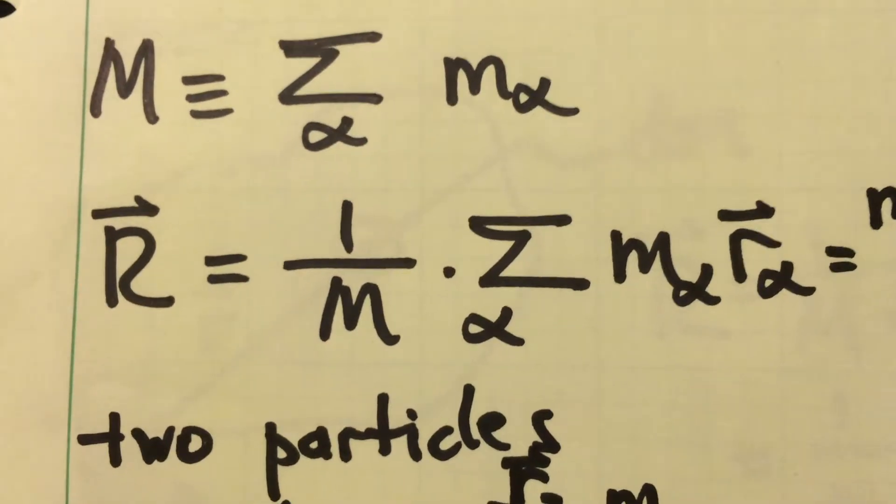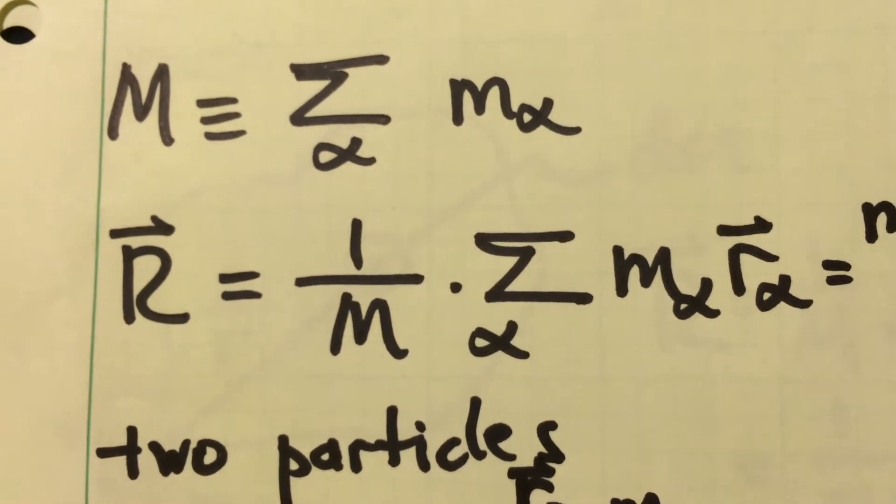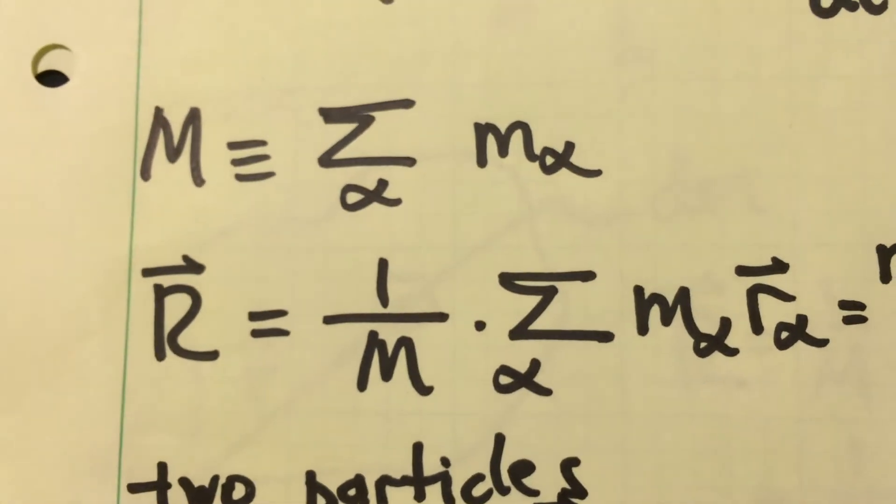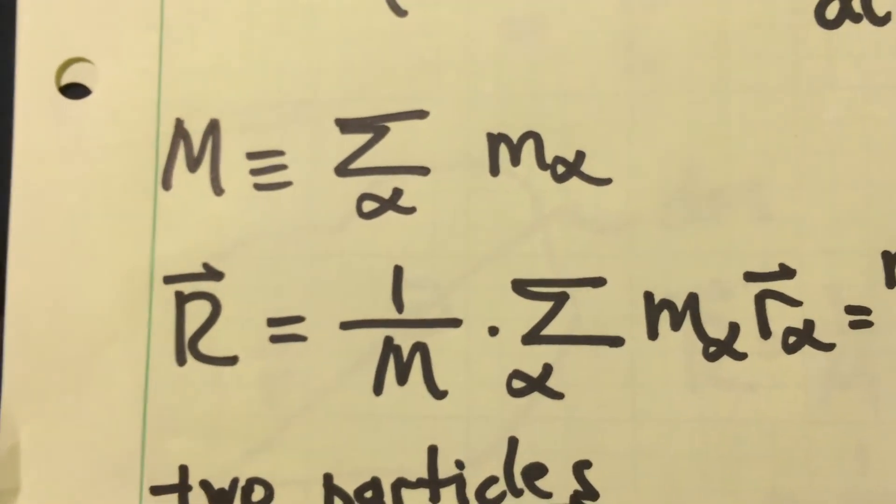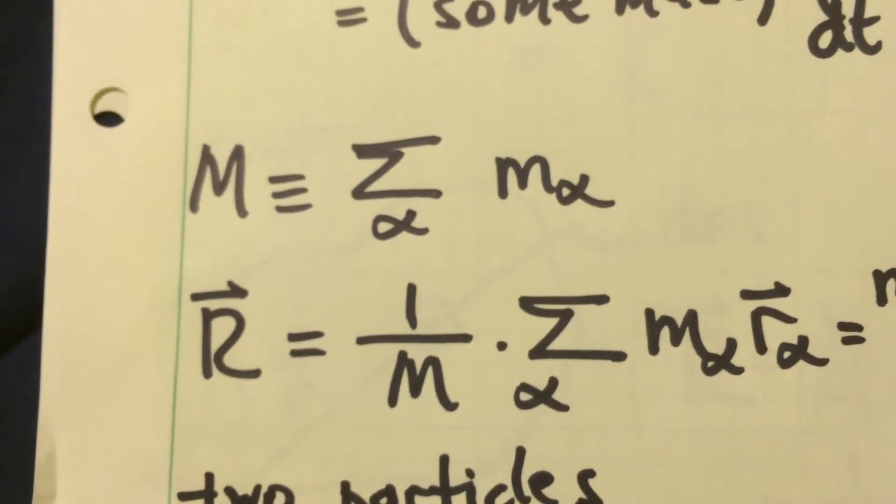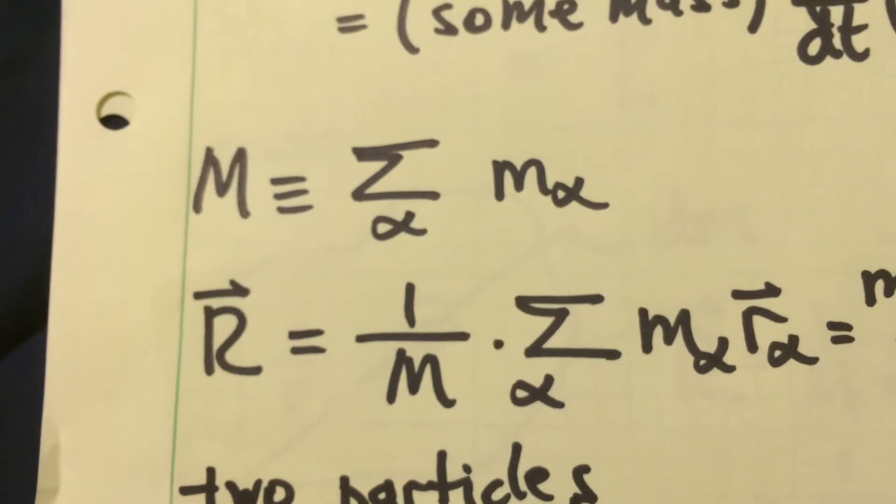Another way of thinking about the position of the center of mass is it's the mass weighted average position of all the particles in the system. So you take the fraction of mass in each particle, multiply that fraction of mass times the position of that particle, and that'll give you the position vector for the center of mass for the system.